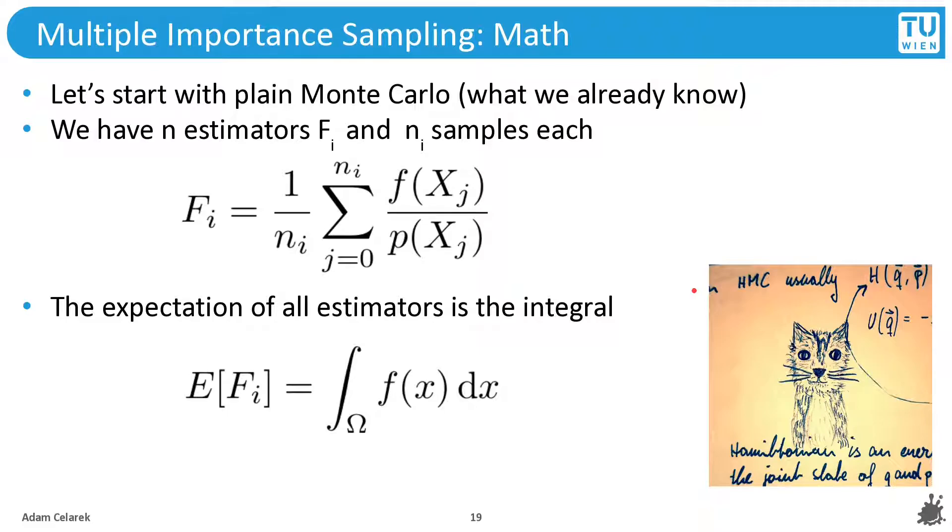Let's start with what we have seen in the previous part with a simple Monte Carlo estimate. Fi, this i denotes several sampling strategies. And this is the estimate for a certain sampling strategy. As we can see here the expectation of this estimator is the integral. So this means that the estimator is unbiased. And we have several of these estimators and all of them are unbiased.